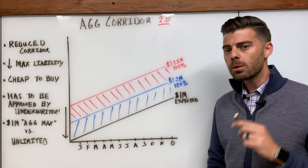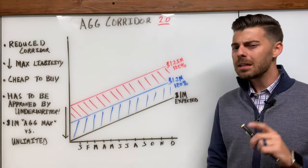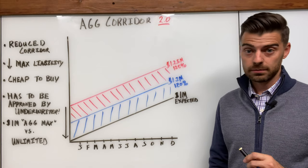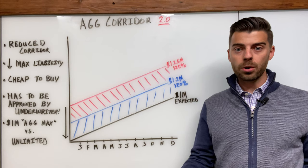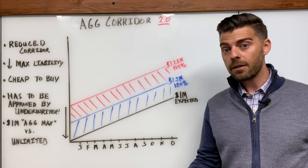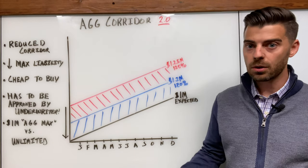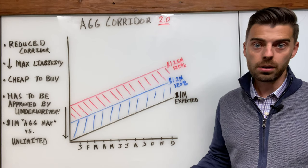But what if you wanted to reduce that maximum liability just a smidgen further? Well, you can get a 120% corridor, for example. Hey, heck, if you're feeling really frisky, maybe ask for 115%. Who knows?